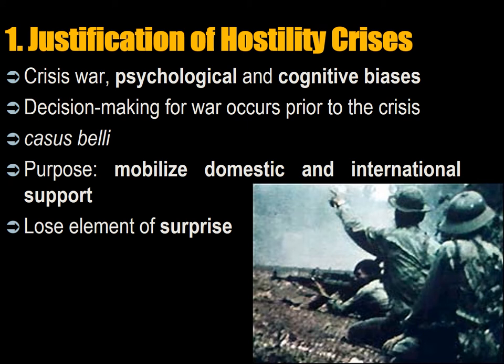The justification of war is needed not only to activate your domestic population — usually through the rally around the flag effect — but also to justify the war to third parties so that they don't intervene against you or create a counter coalition. The purpose of this crisis is to mobilize domestic and international support for war by making the other look like the aggressor or illegitimate actor, thereby making the opponent lose their bases of support. The problem is that you lose the element of surprise by having this kind of preliminary crisis.